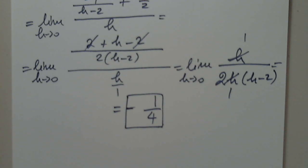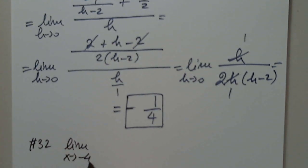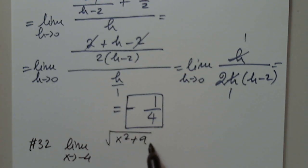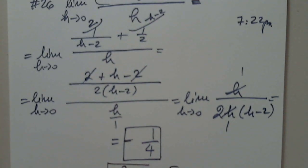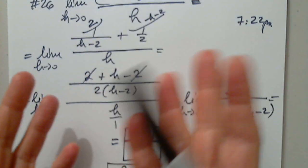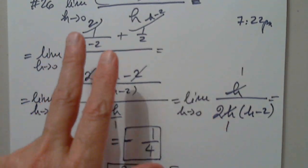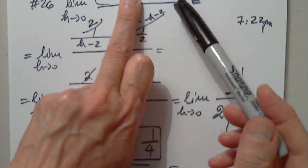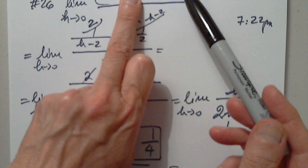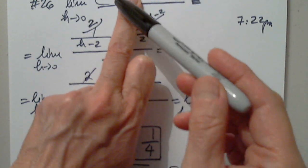Can we try 32? Yes, let's try 32. In problem 32, we have the limit as x approaches negative 4 of the square root of x squared plus 9 minus 5, divided by x plus 4. Let's work on this for a few minutes. Remember, I skipped a step here because of simplification, but remember when h approaches 0 — this is not an indeterminate case because it was negative.